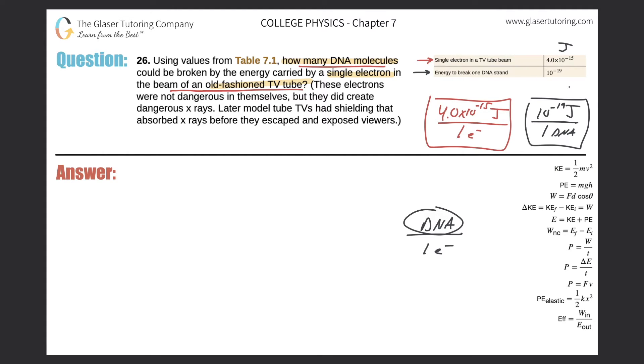But it's in the denominator, so simply just flip it. So one DNA per 10 to the minus 19 joules. And now let me write this, let me take that ratio and simply just plug it on in as I see it because I realize 4.0 times 10 to the minus 15 joules.